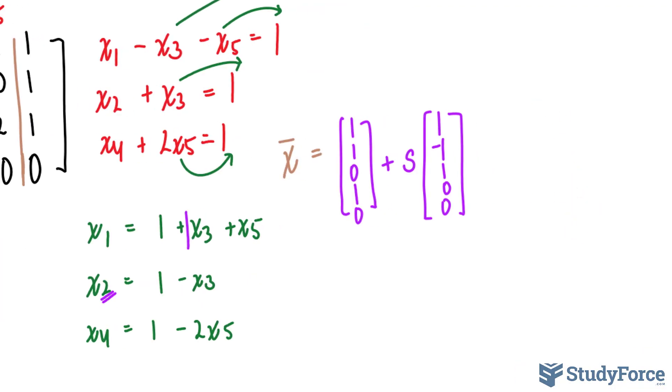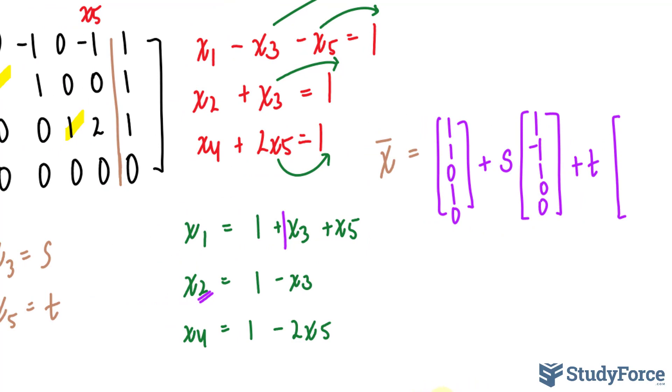And finally, we'll do one for t. Starting over here, remember that t represents x sub five. So over here, we'll write down one. There's no x sub five here, so it's a zero.